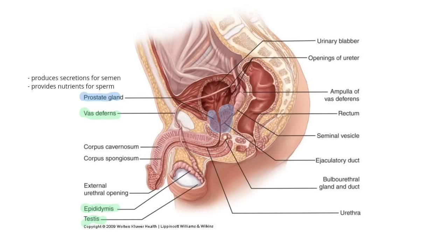The next gland is the seminal vesicle — there are two of these, though you can only see one in this picture. It sits just behind the bladder, and its main responsibility is to produce secretions for semen. That secretion neutralizes the pH of the vagina. The vagina is acidic for protection against pathogens and diseases, and in order to make it more hospitable to sperm cells, the seminal vesicle neutralizes that acidic environment so sperm can fertilize the egg.